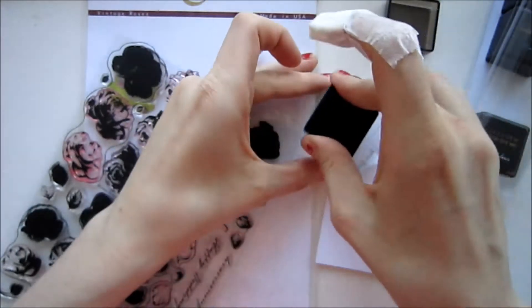To start off I'm going to take one of my favorite stamp sets from Altenew called Vintage Roses combined with this ink cube set from Altenew.